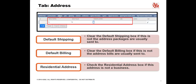To enter a customer address: 1. On the customer record, click the Address sub-tab. 2. Clear the Default Shipping box if this is not the address packages are usually sent to. 3. Clear the Default Billing box if this is not the address bills are usually sent to. Default billing and shipping addresses are selected when you enter a transaction for this record. 4. Check the Residential Address box if this address is not a business. This information helps ensure accurate shipping rates from UPS and FedEx.